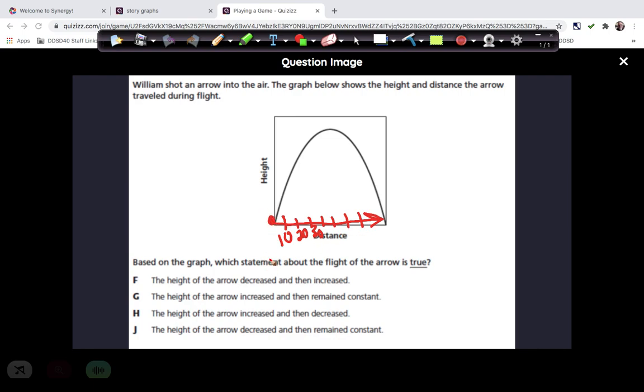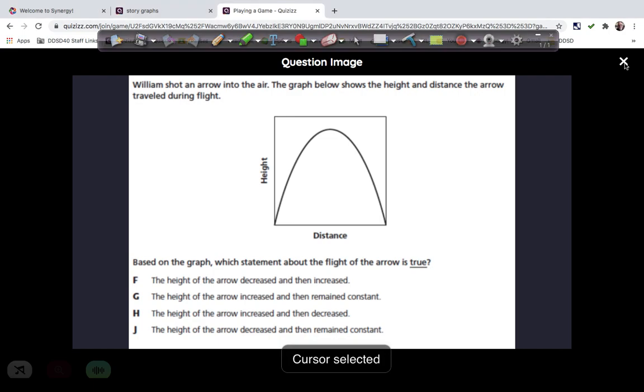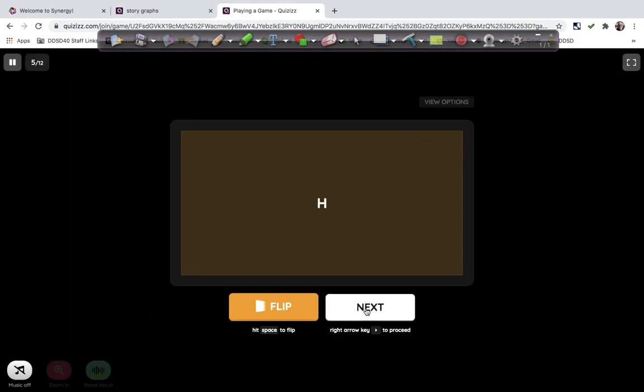So it starts at zero distance and at zero height. And he shoots it up in the air, and the height keeps going up until it gets a certain distance away, and then it starts to go back down. So we really have to think about this going this direction. So the height of the arrow decreases and then increases. That doesn't happen. The height of the arrow increases and then remains constant. That doesn't happen because of gravity. The height of the arrow increases and then decreases. The height of the arrow decreases and increases. It remains the same. That's not correct. So it should be H. H. Good.